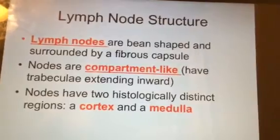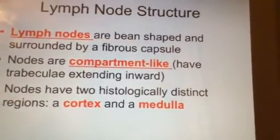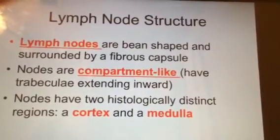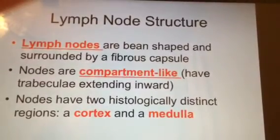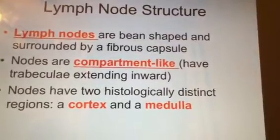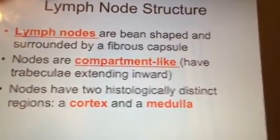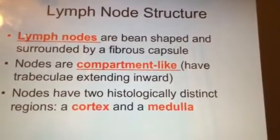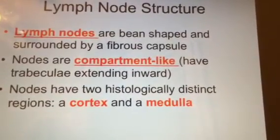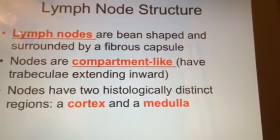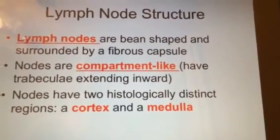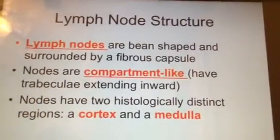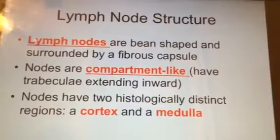Slide 18 covers lymph node structure. Think of lymph nodes as small lima beans — little bean-shaped structures surrounded by a tough fibrous capsule, like a lima bean you have to poke through to get inside. Once inside, they're very compartmentalized with little compartments walled off by areas called trabeculae, which extend into the lymph nodes.